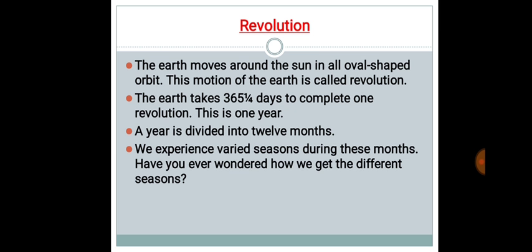Now, next point is revolution. So, what is revolution? The earth moves around the sun in an oval-shaped orbit. This motion of the earth is called revolution. The earth takes 365¼ days to complete one revolution. This is one year.